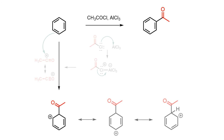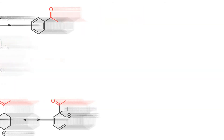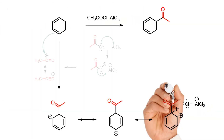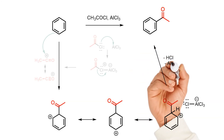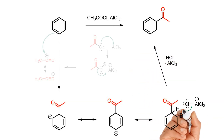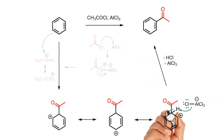The sigma-complex is stabilised by delocalisation of the electron deficiency over the remaining pi-system, which makes the intermediate achievable. In the last step of the reaction, the sigma-complex is deprotonated in order to reform the aromatic 6-pi-system. This gives the acylbenzene product, as well as the HCl by-product, and the Lewis acid is regenerated.